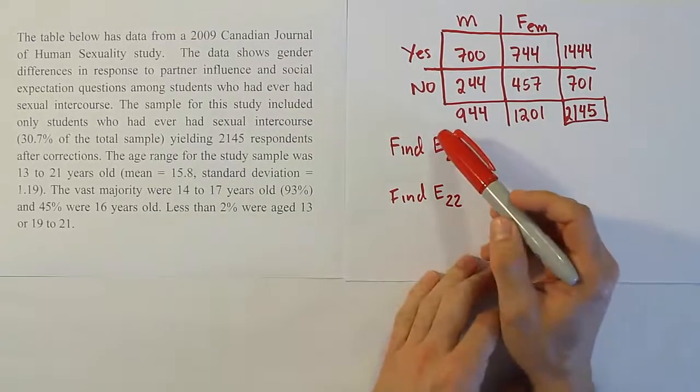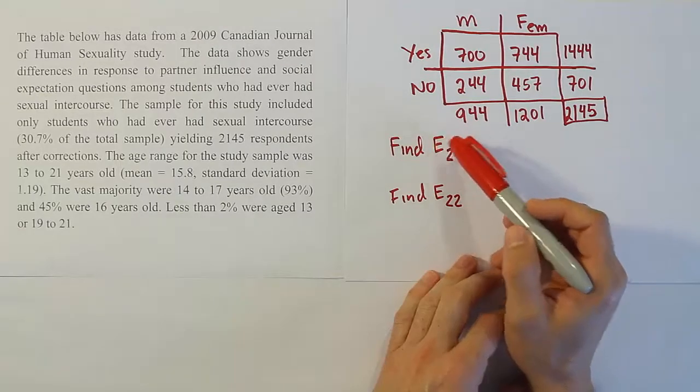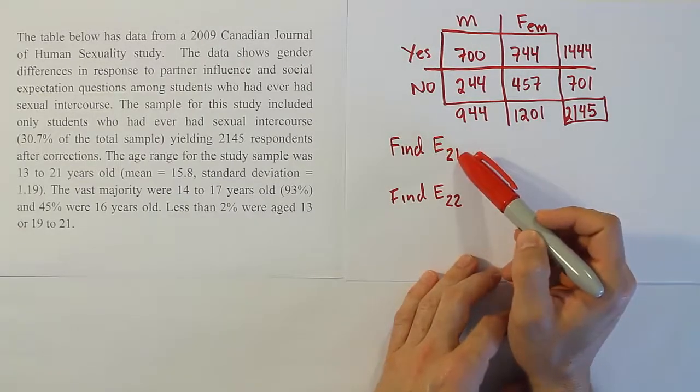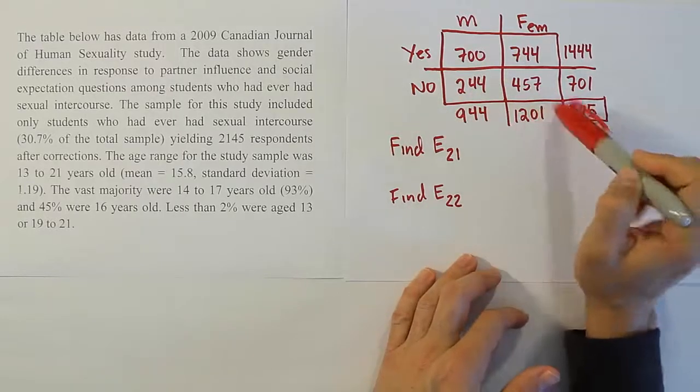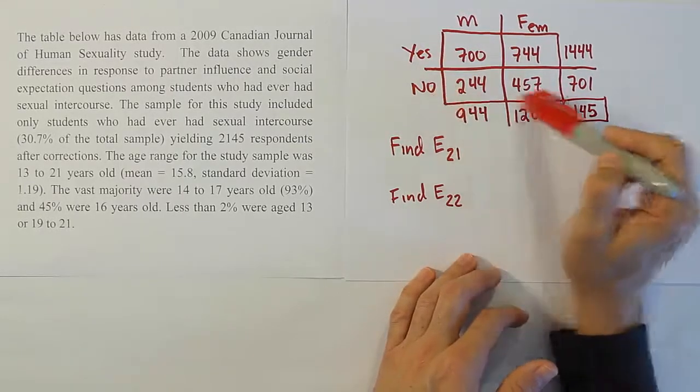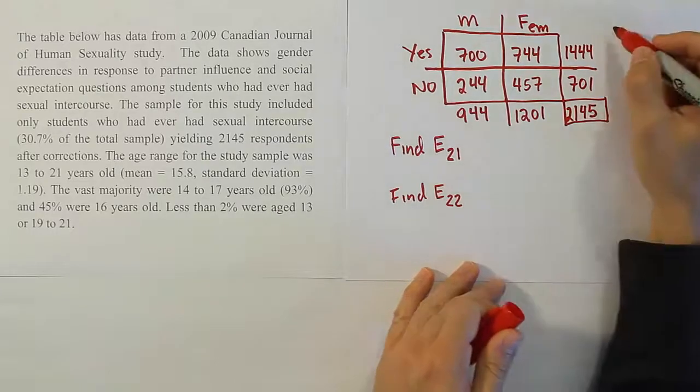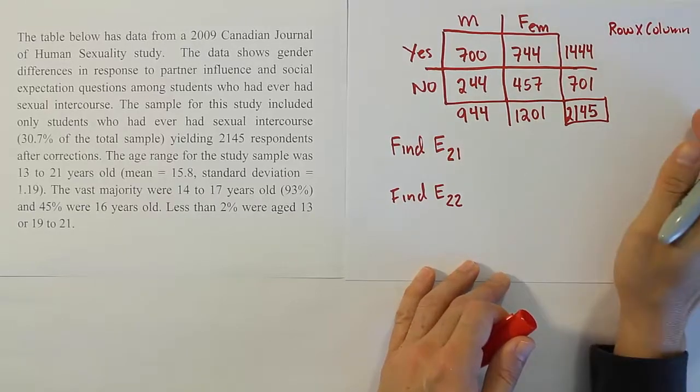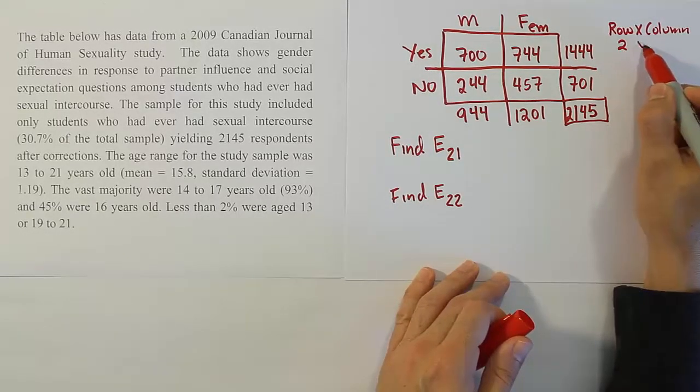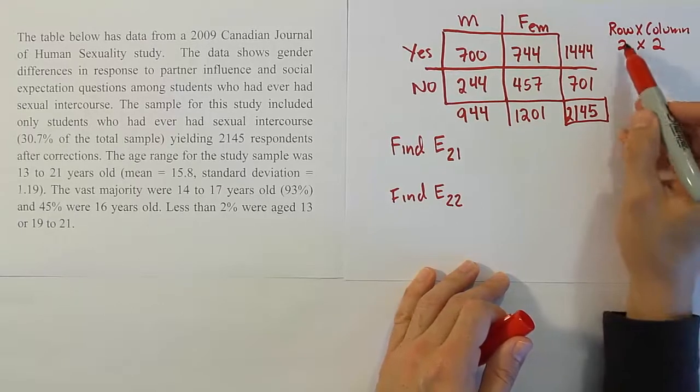Now they're asking us to find the expectation for cell 2,1. When you look at this, this is a 2 by 2 table. It's 2 rows and 2 columns. That's how we name cells, that's how we name a table. It's a row by column naming system. So when you want to say it's a 2 by 2, that means it's 2 rows by 2 columns. And we always start with a row.